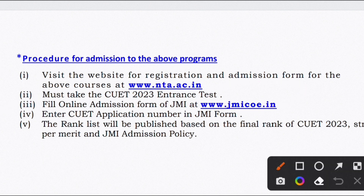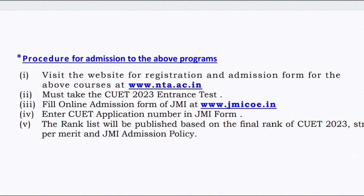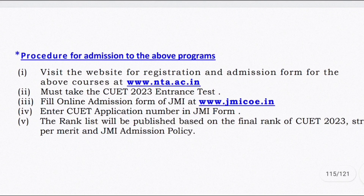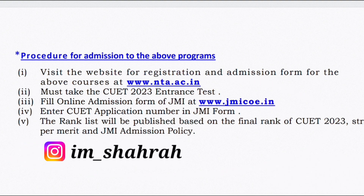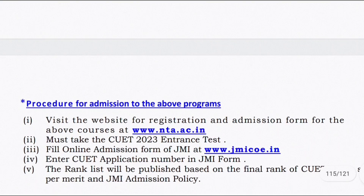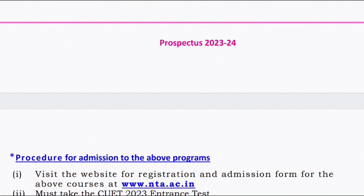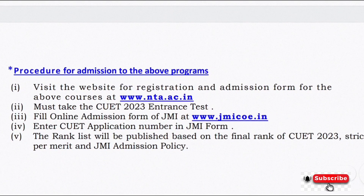After that, you will fill a separate form at www.jmicoe.in, where you will add your CUET application number. The application number you receive after filling the CUET form will be used to fill this second form. When the rank or merit list is decided, marks will be considered according to CUET scores and the cut-off list. Hopefully everything is clear — if there is any confusion or doubt, you can ask me in the comment section or on my Instagram. In total, there are 15 UG courses and 5 PG courses under CUET. Thank you so much, bye bye.